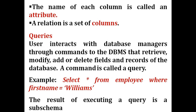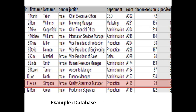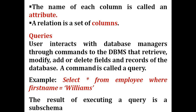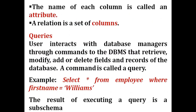The name of each column is called an attribute, and a relation is a set of columns. ID, first name — these are all attributes. A relation is ID corresponding to first name and last name. The user interacts with the database through commands to the DBMS that retrieve, modify, add, or delete the fields and records of the database. A command is called a query.